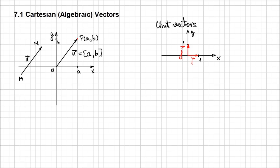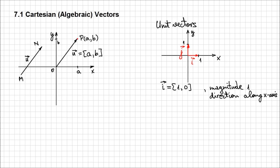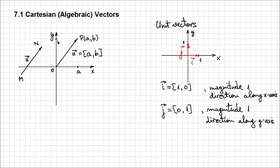So if we want to describe these vectors i and j in an algebraic format, just like before, we're going to say i is [1, 0]. It only has values on the x-axis and nothing on the y-axis. While j is the unit vector described in an algebraic format as [0, 1], because it has a magnitude of 1 but the direction is along the y-axis. That's why the x-coordinate has 0 and the y-coordinate has 1, the unit.